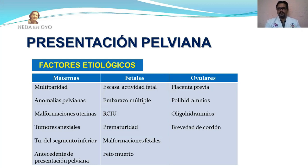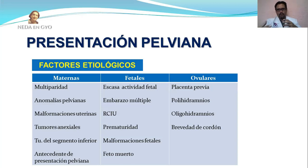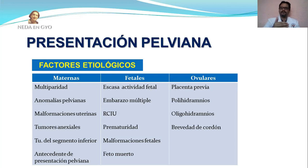Las malformaciones uterinas, llamadas malformaciones müllerianas como útero bicorne, didelfo o útero arcuato, también predisponen a una presentación pelviana. Los tumores anexiales, tumores de ovarios de gran tamaño, tumores en las trompas uterinas, o tumores a nivel de colon, pueden dificultar el movimiento del feto hacia la presentación cefálica. Igualmente, tumores del segmento inferior como un mioma o adenomiosis impiden que el feto rote. Los antecedentes de presentación pelviana en un embarazo anterior constituyen un factor de riesgo para presentación pelviana en el embarazo actual.